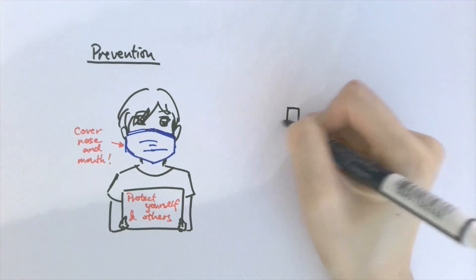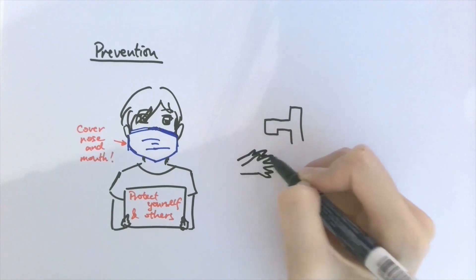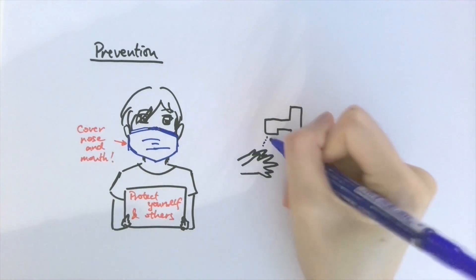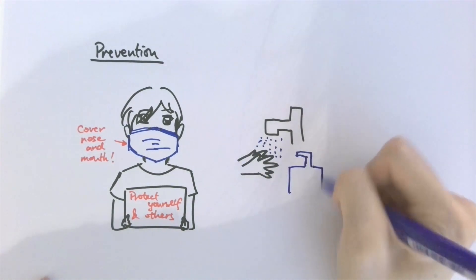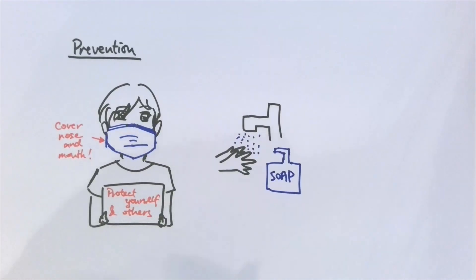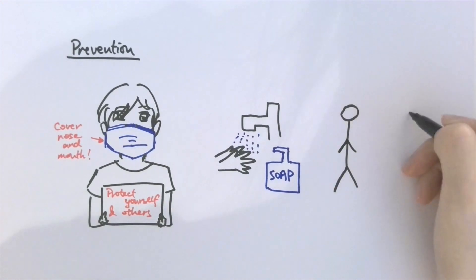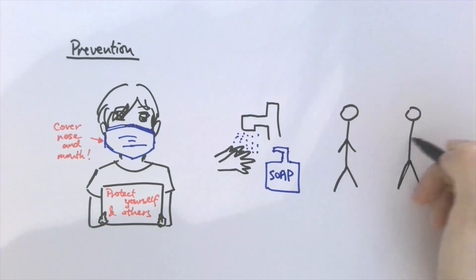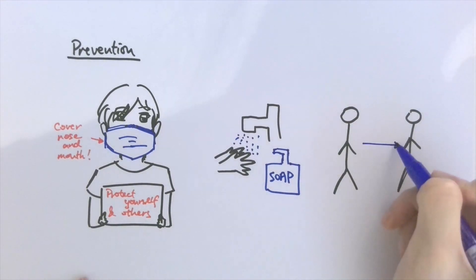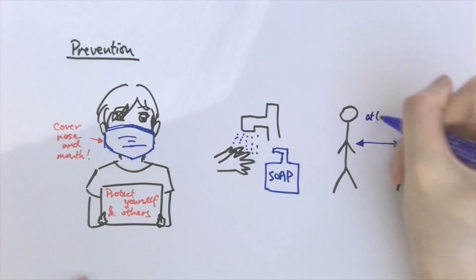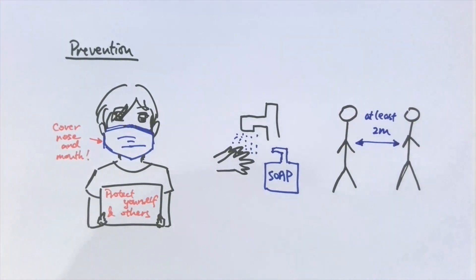Another important measure is to wash your hands regularly with soap and water. Hand sanitizers with at least 70% alcohol also work if there isn't any soap or water available. Social distancing is also really important, especially if you're not wearing a face mask, as it reduces the probability of inhaling droplets when you talk to someone or pass by people who are talking.